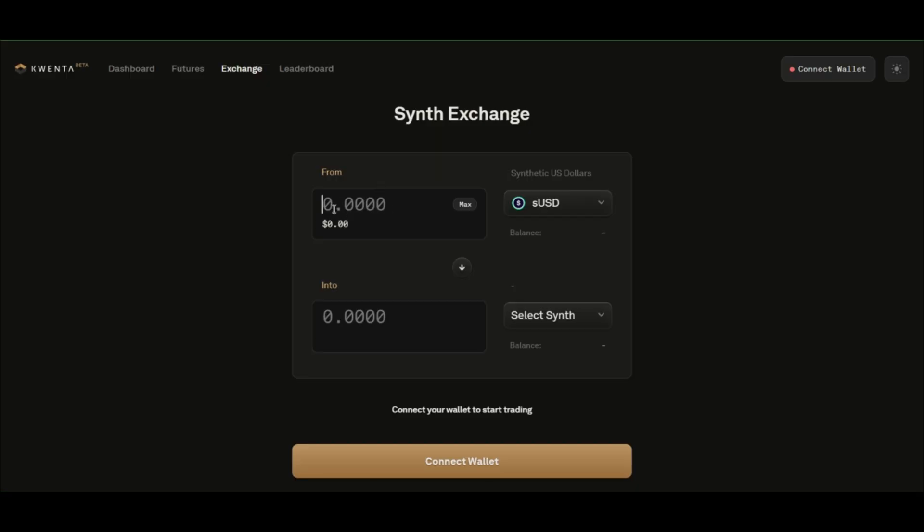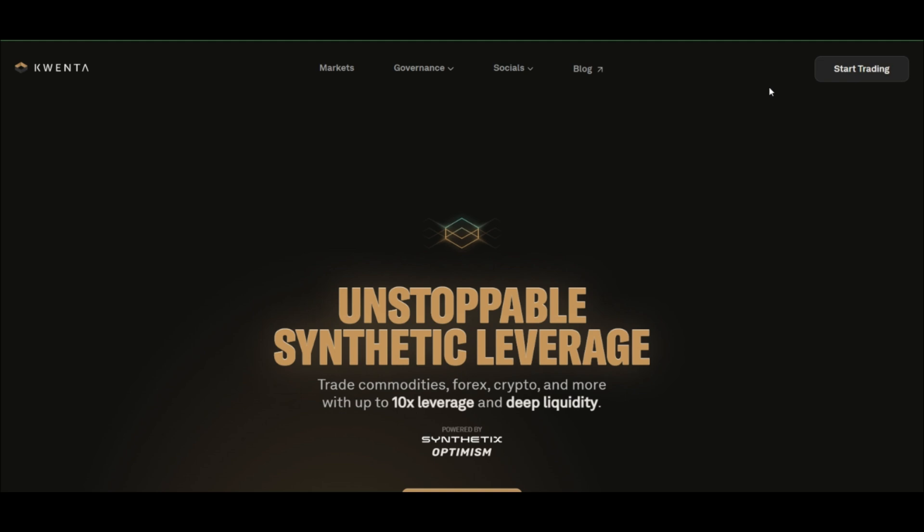SNX is locked into the smart contract and the user gets one-fifth of sUSD against the locked SNX. According to Synthetix, the optimal collateralization ratio is 750%. This helps keep synths from being over-minted and restore the sUSD to USD ratio peg. Which synths can you actually trade on Synthetix exchange today, and how can you trade them?